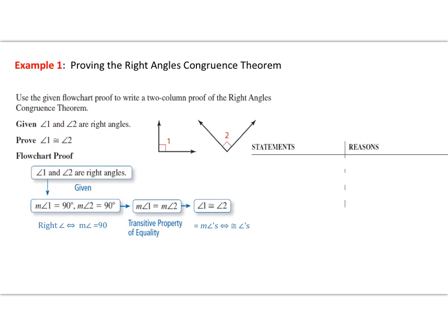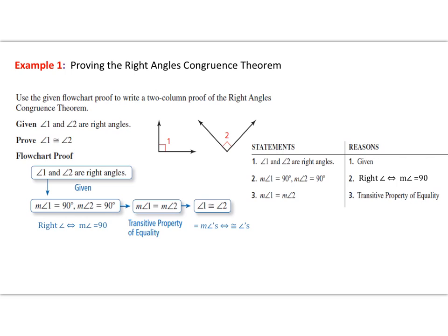Now let's fill in the two-column proof using the flowchart information. We always start with the given. Our next statement is measure of angle 1 equals 90 and measure of angle 2 equals 90, with the reason that right angles implies measure equals 90. Then measure of angle 1 equals measure of angle 2 by the transitive property of equality. Our final conclusion — our goal — is angle 1 is congruent to angle 2.